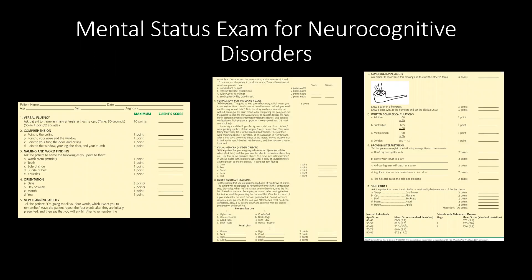In the mental status exam for neurocognitive disorders, we assess verbal fluency, comprehension, and ask them to complete different tasks. We help with naming and word finding, assess orientation, new learning ability, immediate recall, and long-term memory recall. We also assess visual memory, paired associative learning, constructional ability by having them recreate a drawing, ability to do calculations, proverb interpretation, and the ability to identify similarities in objects.